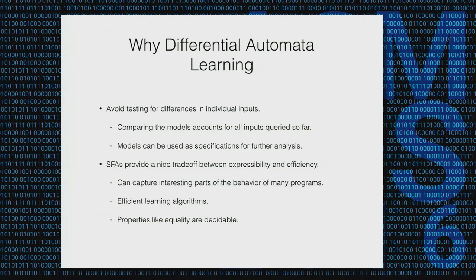Why is differential automata learning a good thing? First, we avoid testing for differences in individual inputs — the queries the learning algorithm makes account for all inputs performed so far. Second, we actually get a model of the program. Even though the model might be incorrect after we find differences, it can be used as an approximation of the program's behavior for further analysis. Even without knowing exactly what Google Chrome parses as JavaScript, having an approximation as a symbolic automaton can be used to evaluate the security of web applications against cross-site scripting attacks.